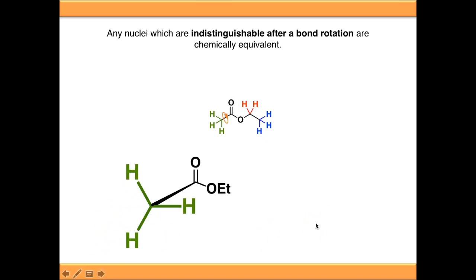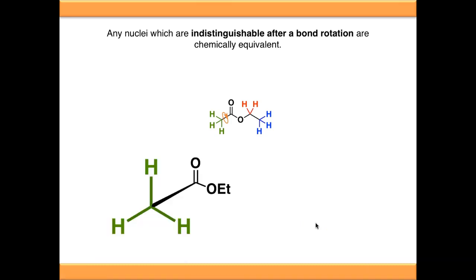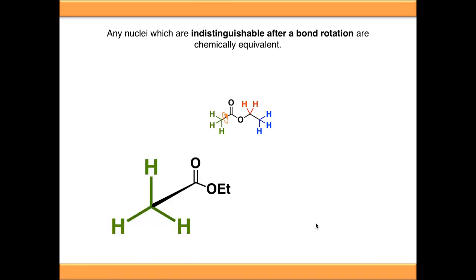But if I continue rotating this and then black it out, when I bring it back, can you tell me which of those protons was the one you were keeping track of? The answer is no, it could be any of these three. As a result, all three are in the same chemical environment, they are all chemically equivalent, and that's why they give rise to one signal.